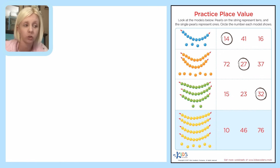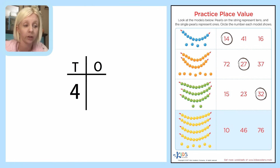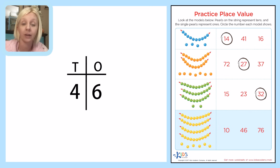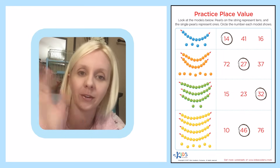For the last one, let's use the T-chart to keep everything organized. Count the tens strings: 1, 2, 3, 4 — four strings of ten, so put four on the left. Count the single ones: 1, 2, 3, 4, 5, 6 — put six on the right. That is the number 46. Come over here and circle 46. Nice job today with your place value — bye bye!